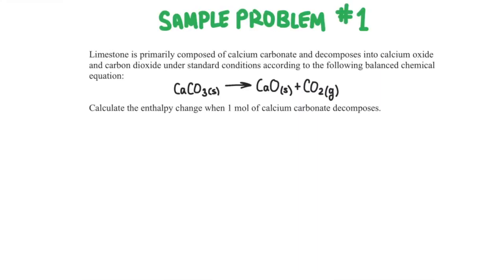So let's look at what this question might look like if it was in an exam question or a textbook. It might say something like this. Limestone is primarily composed of calcium carbonate and decomposes into calcium oxide and carbon dioxide under standard conditions according to the following balanced chemical equation. Calculate the enthalpy change when one mole of calcium carbonate decomposes.